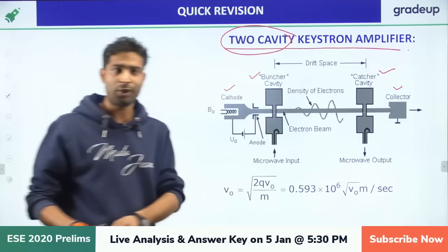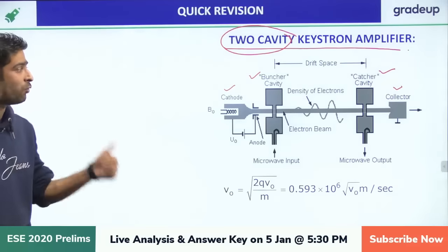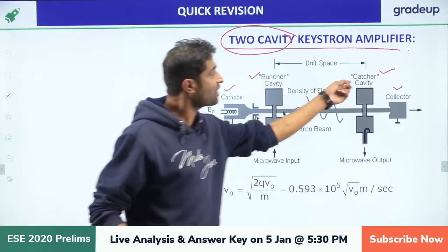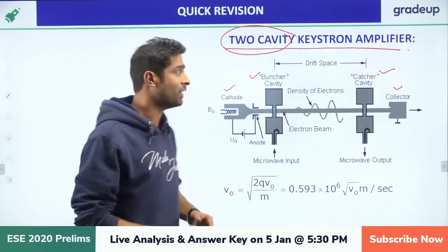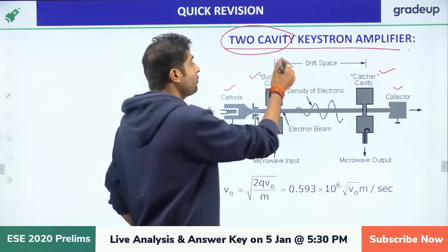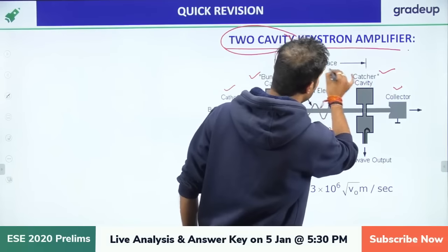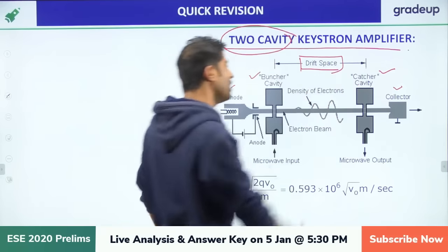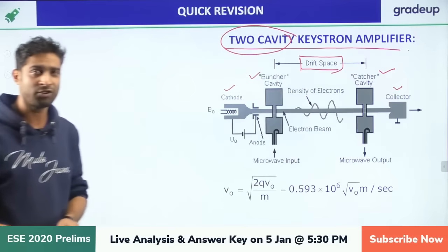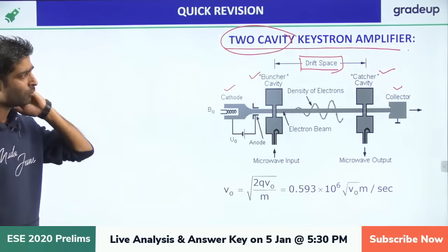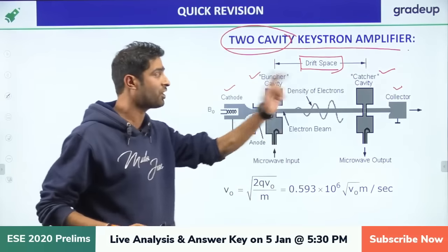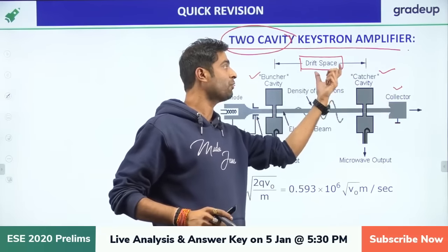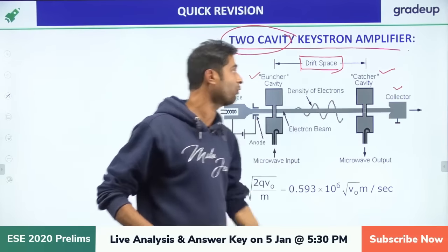One cavity is called the buncher cavity and the other is called the catcher cavity. The distance between these two cavities is called the drift space. So remember: first cavity is the buncher cavity, second is the catcher cavity, and the distance between them is the drift space.